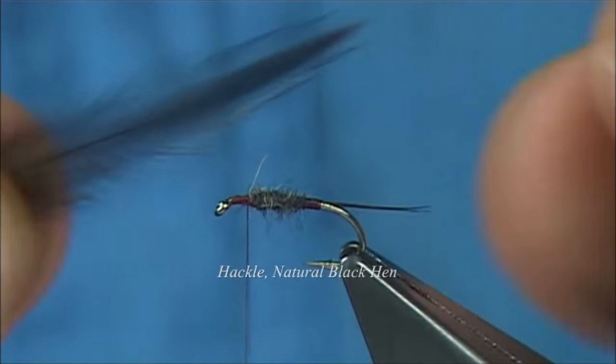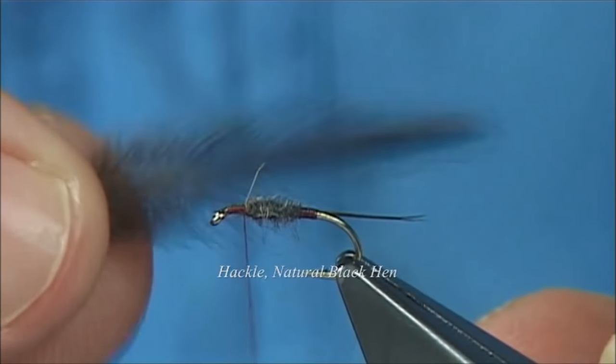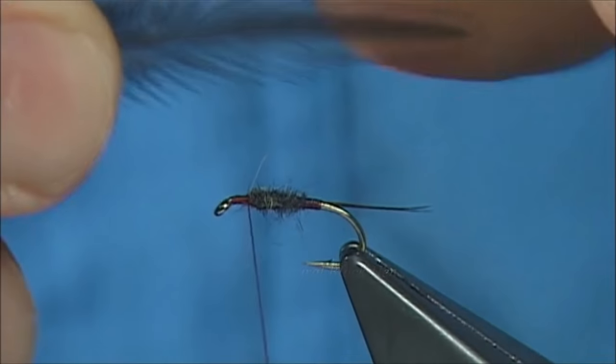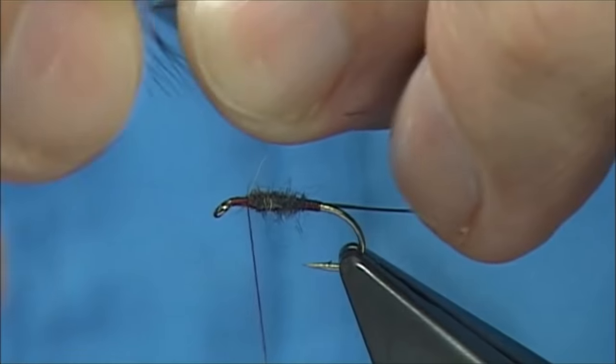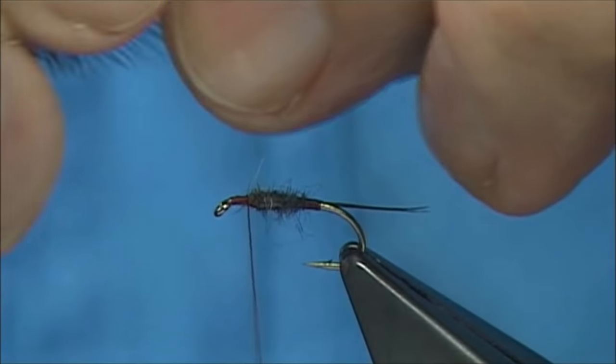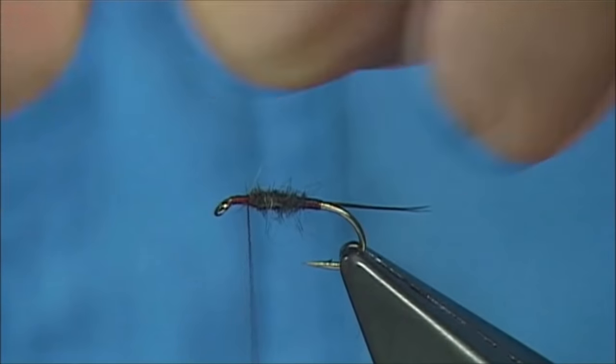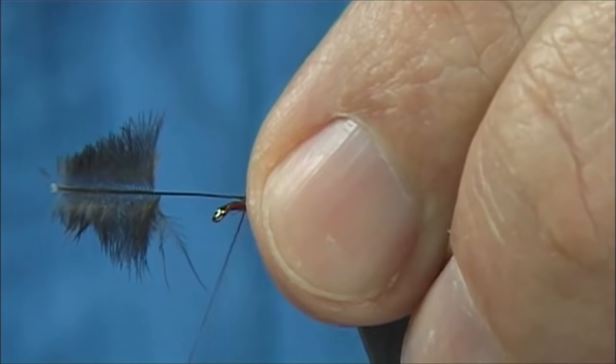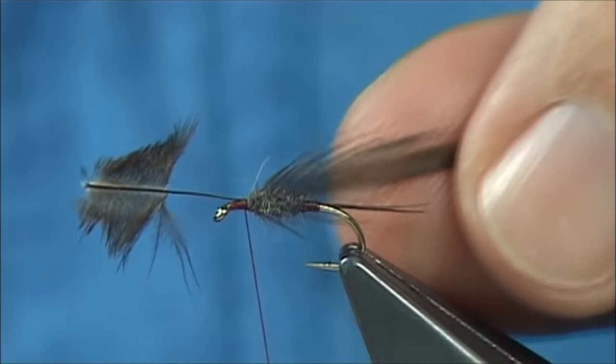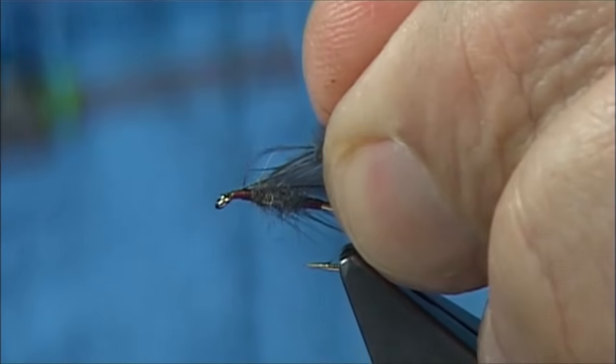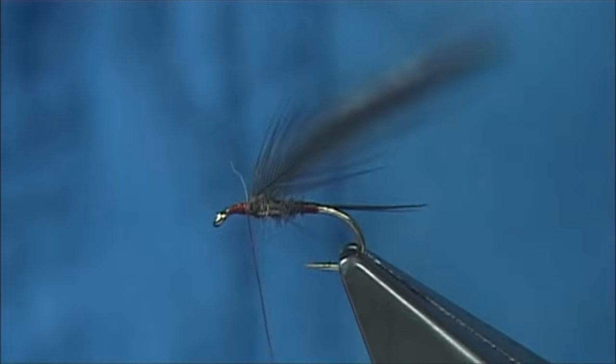Now for the hackle, we've got the natural black. Now I'm going to tie this in, normally hen hackles you would tie in by the tip but in this case, I'm just going to tie it in down the bottom. I'm just going to pull away the fluff with the good side of the feather facing myself, come down two or three turns, fold it back, come back up and break that off.